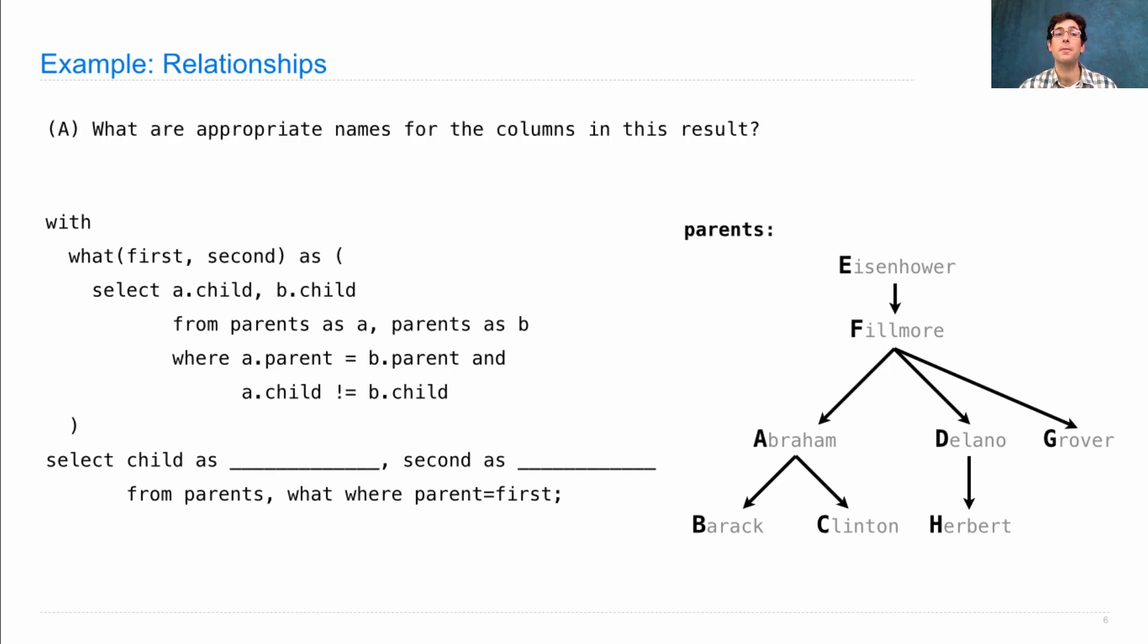So the questions for you are, what are appropriate names for the columns in the result, which would be filled in in these two blanks? And how many rows will result from this query? Think about it for a minute and we'll go through it in three, two, one. So first of all, what is a terrible name for a table? This local table should be called siblings because that's what it contains. It contains all the pairs of children that have the same parent.